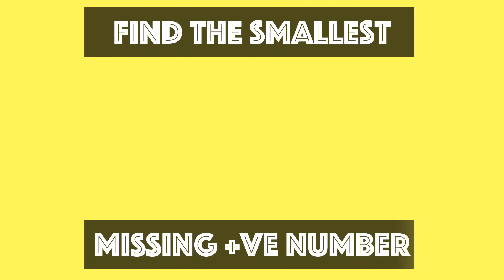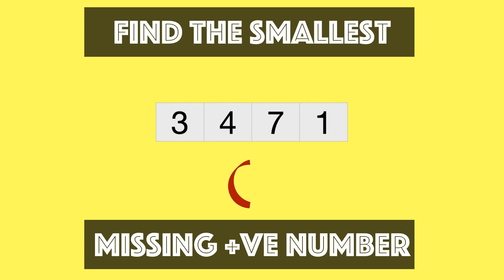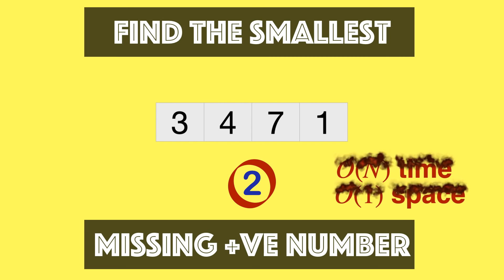We have to find the smallest missing positive number from the array. In this case we have [3, 4, 7, 1] — one is already there, so two is missing, and the answer is two. We can do this in O(n) time with multiple scans, but the space complexity demand is O(1), which makes this problem really cool and difficult at the same time.